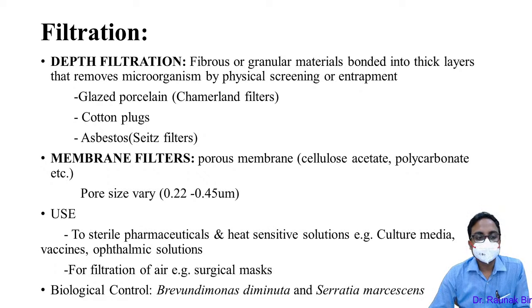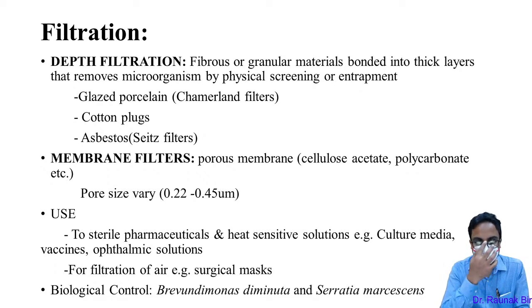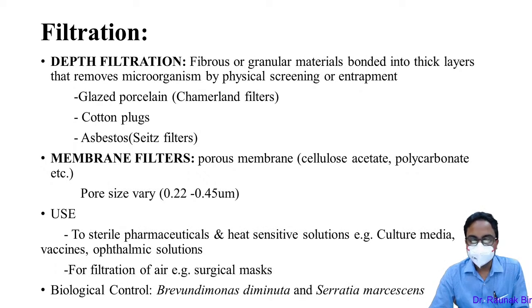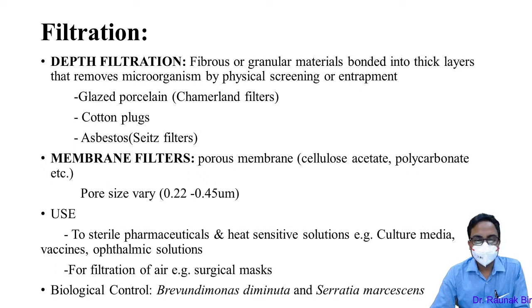The third method is filtration. There are two types: gravity-mediated depth filtration and membrane filtration. In depth filtration, fibrous or granular material bonded into a thick layer removes organisms due to pore size by physical sieving or entrapment. Earlier we used glazed porcelain Chamberland filters and Seitz asbestos filters. Nowadays we use membrane filters made of cellulose acetate, nitrocellulose, or polycarbonate.